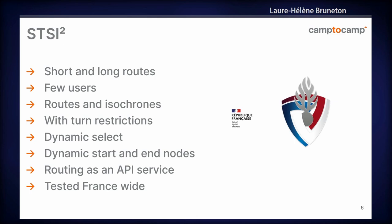The other project is STS Icarre, a data and service provider for the French police and army. The use case is different because they want to provide routing for any of their users, so there can be short and long routes, but they won't have as many simultaneous requests as Nexus. They want to compute not only routes but also isochrones, and they will need turn restrictions. The service is also provided as an API and tested France-wide.